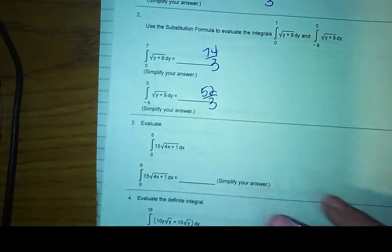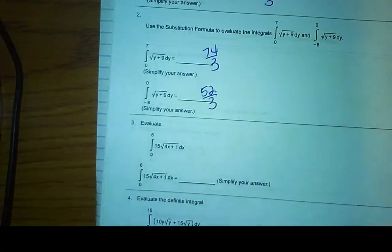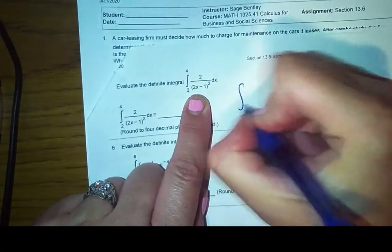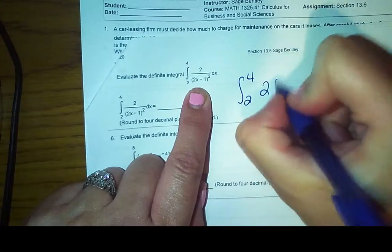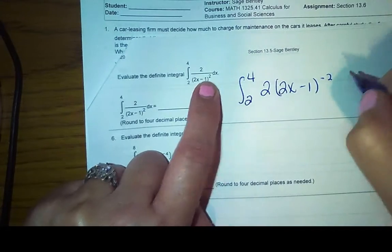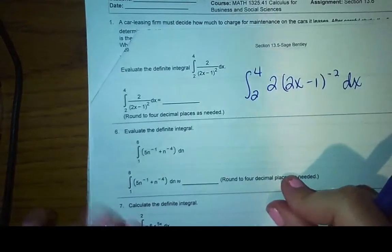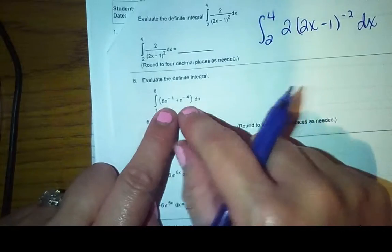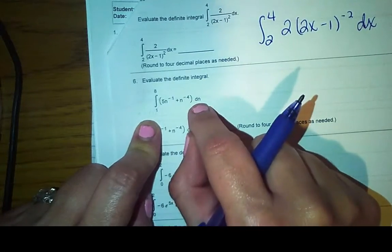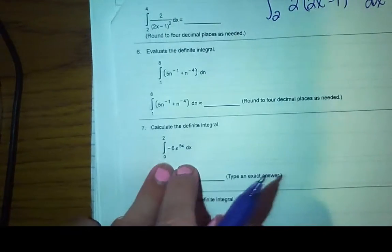All right, so which means you should know how to do number three. You should know how to do number four. So now we are at, there's just one that I'm going to have to show you how to do, because it's not going to take a decimal approximation. So this one, rewrite this as two to four of two times two X minus one raised to the negative two DX, and go from there. This one, it's in N's, use X's. So you'll have five X to the negative one plus X to the negative four DX. This is the one that we need to walk through.